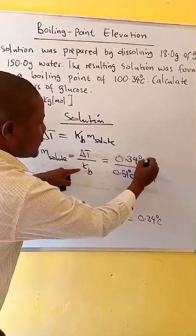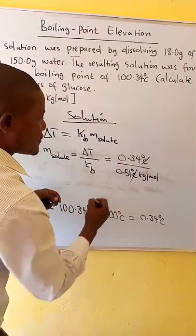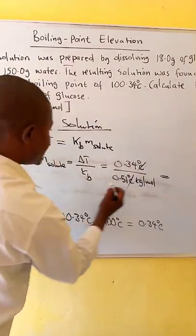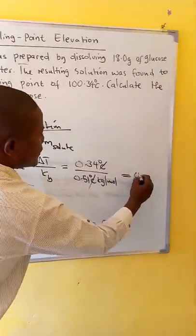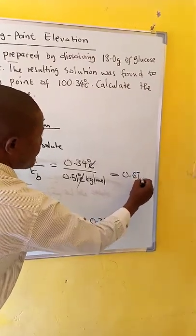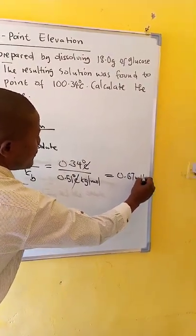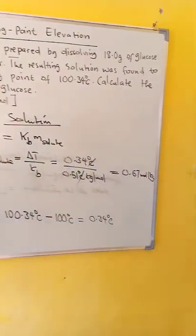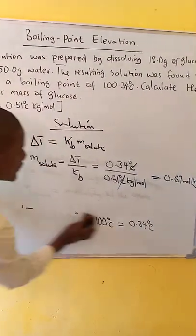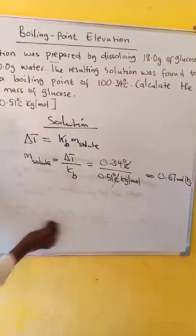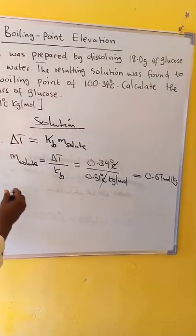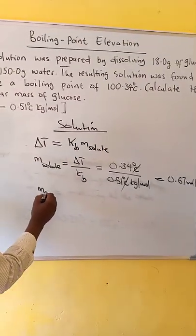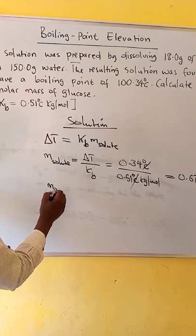When we divide, we get 0.67 mole per kg. So this is our molality of the solute: 0.67 mole per kg.